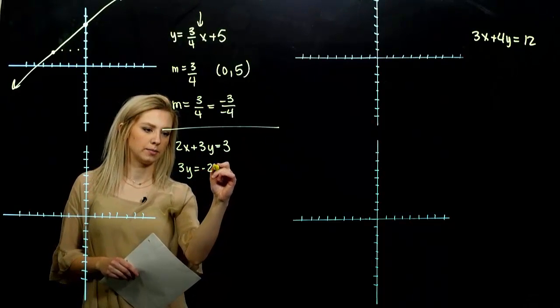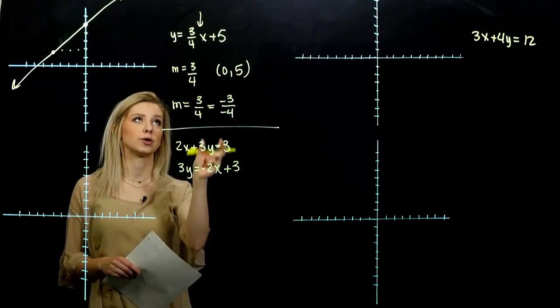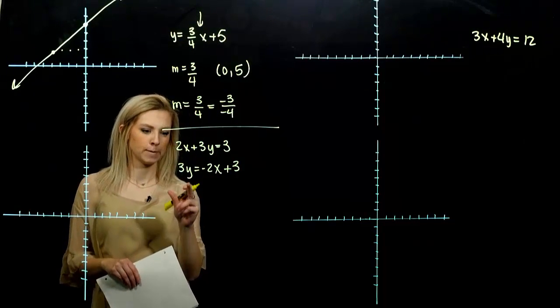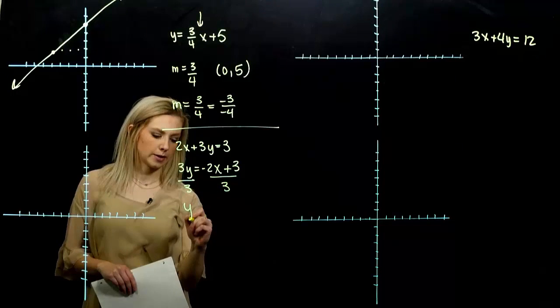I need y on its own. I'm going to subtract 2x from both sides. We write the x-coordinate first, just so you don't make the mistake, which is the slope, which is the y-intercept. And I need y on its own, so we need to divide all sides by three.